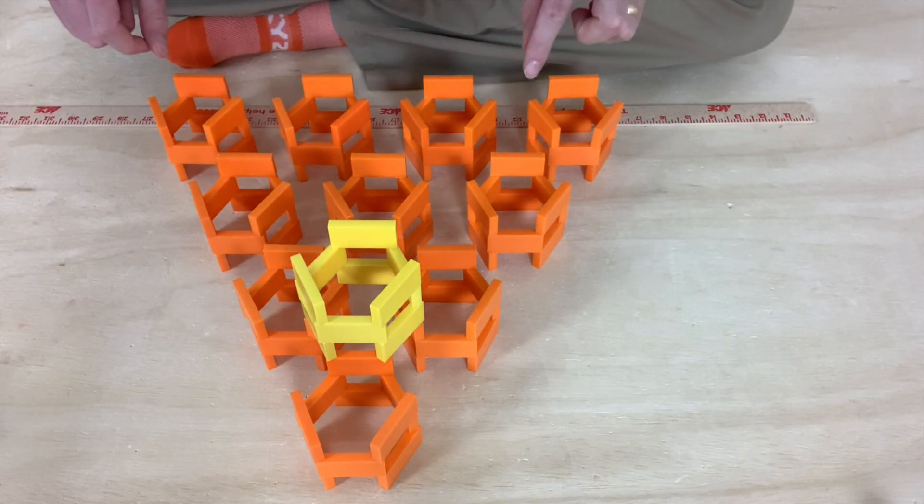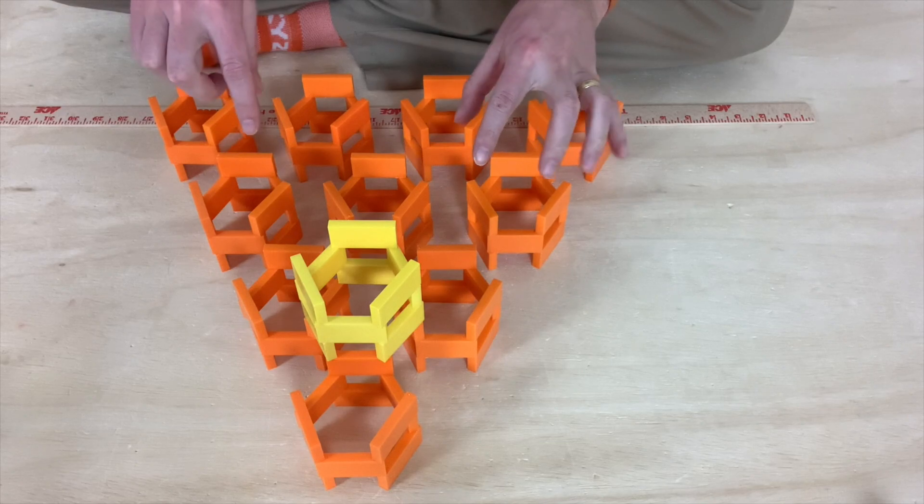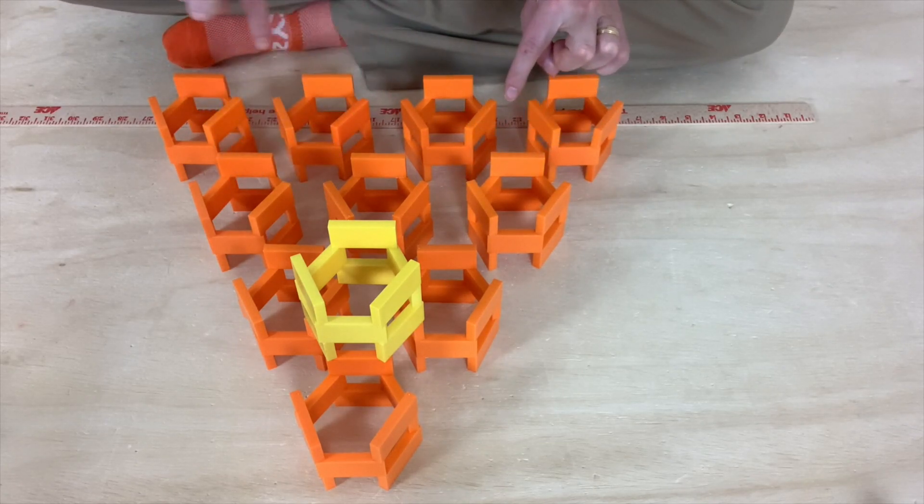And we want to do the same thing for the hexagonal spaces between, so we want to build yellow hexagons here, here, here, here, and here.